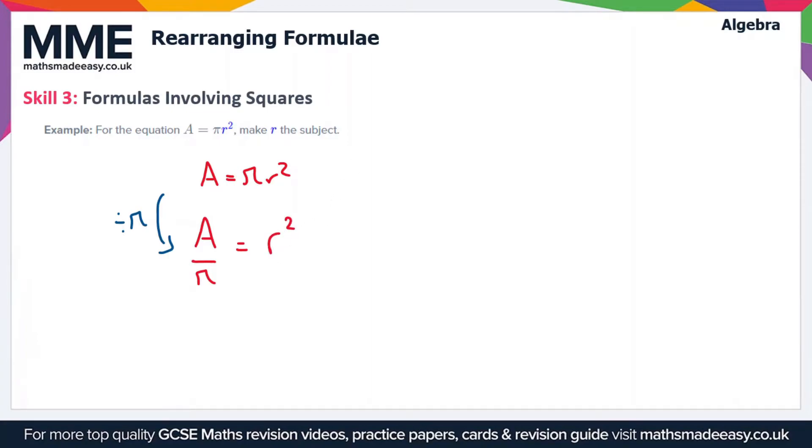So now all we have to do to get r on its own is just take the square root of both sides of the equation. If you want to remove a square you just do the square root, so we're going to get the square root of A over π is equal to r. Now we've got r on its own here so r is now the subject of the equation.